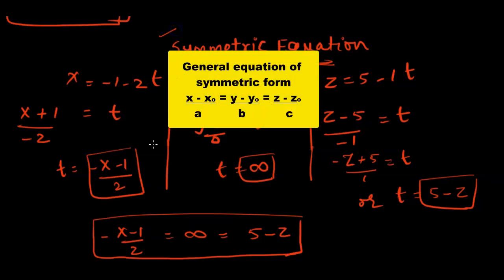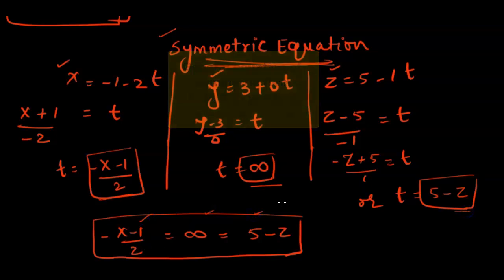To write the symmetric form, we use the vector or parametric form. If given the vector form, we first write it in parametric form. If given the parametric form, we use it directly. We take the x, y, and z parts of the parametric form, isolate t from each, then set the t values equal to each other. That is called the symmetric form of the equation.